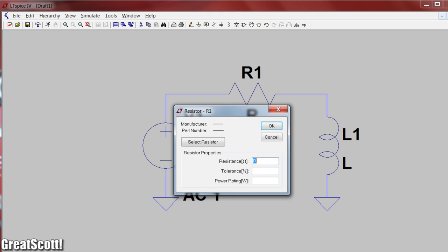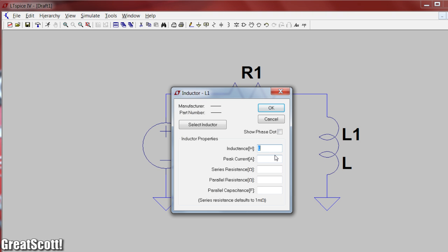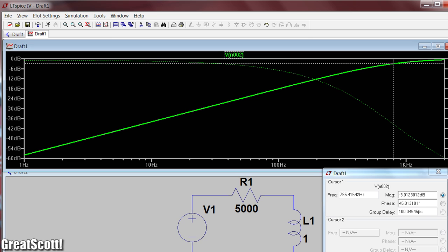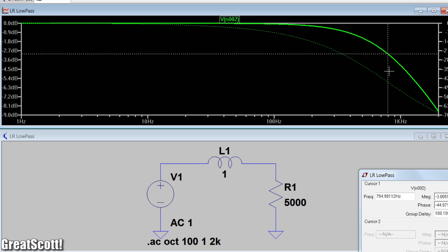Here I did a small simulation in LTSpice to demonstrate that if we had a 5 kOhm resistance, we can keep out frequencies under 800 Hz with this high-pass filter, or we can keep out frequencies of above 800 Hz with this low-pass filter.